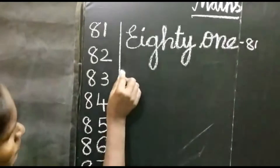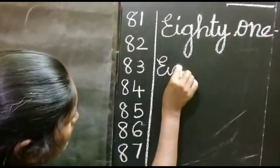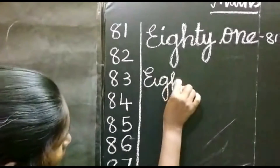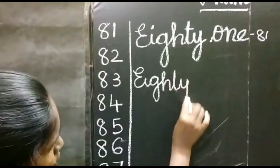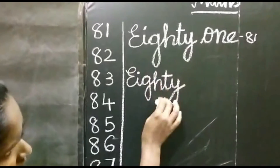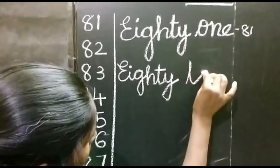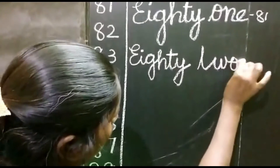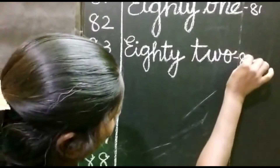82. E-I-G-H-T-Y. 80, then 2. T-W-O. 82 is EIGHTY TWO.